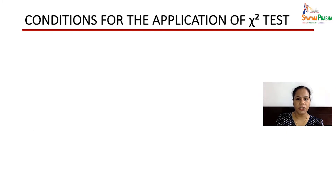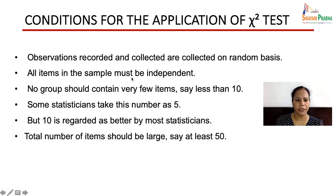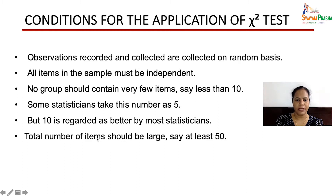Now let us see the conditions for application of the chi-square test. Observations should be collected on a random basis and all items in the sample must be independent. No group should contain very few items — at least 10 items per group is regarded as better by most statisticians. The total of all groups or cells should be at least 50.